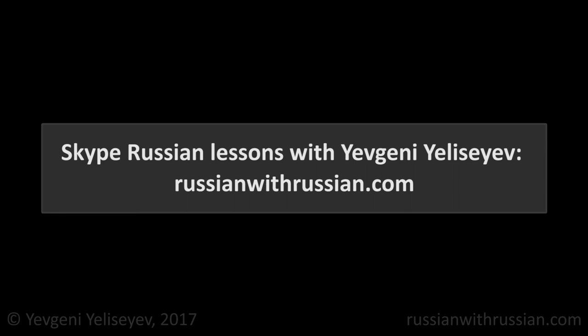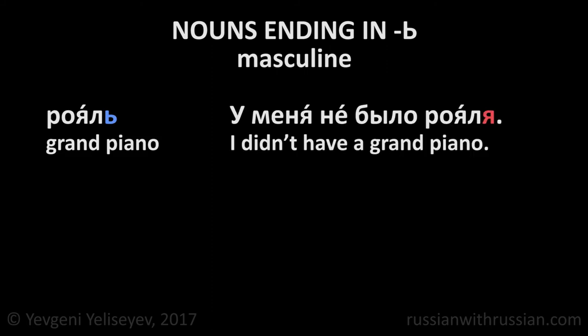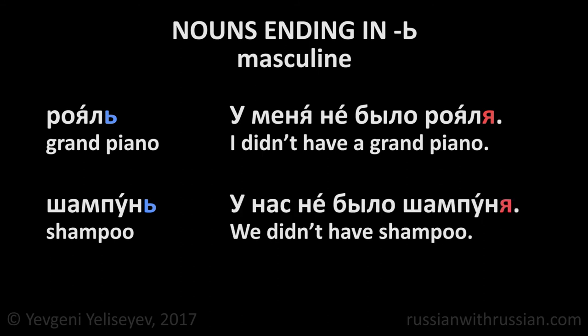The endings of nouns ending in soft sign depend on their gender. Masculine gender nouns: Рояль — grand piano. У меня не было рояля. I didn't have a grand piano. Шампунь — shampoo. У нас не было шампуня. We didn't have shampoo.